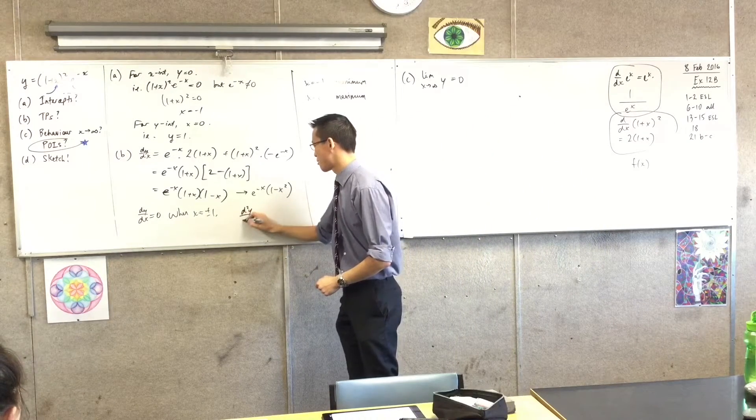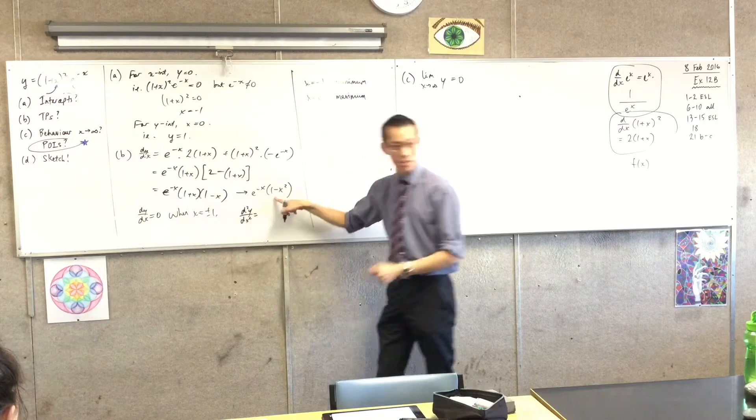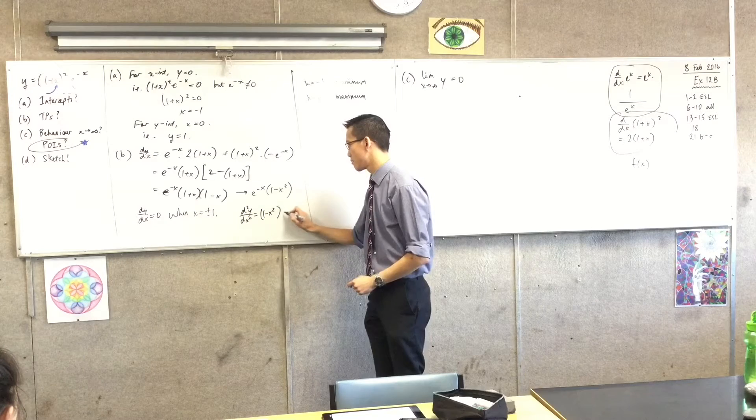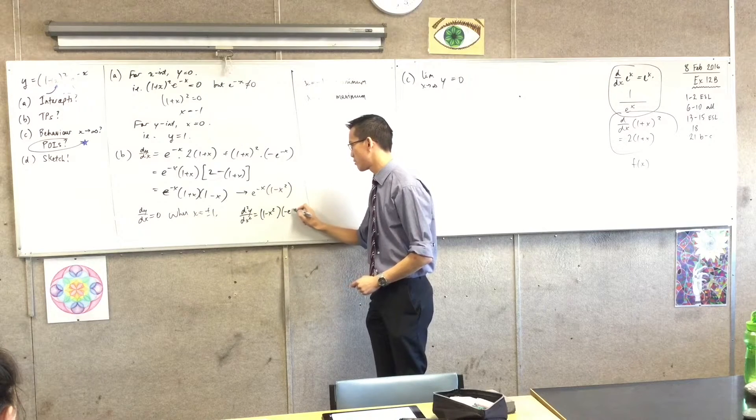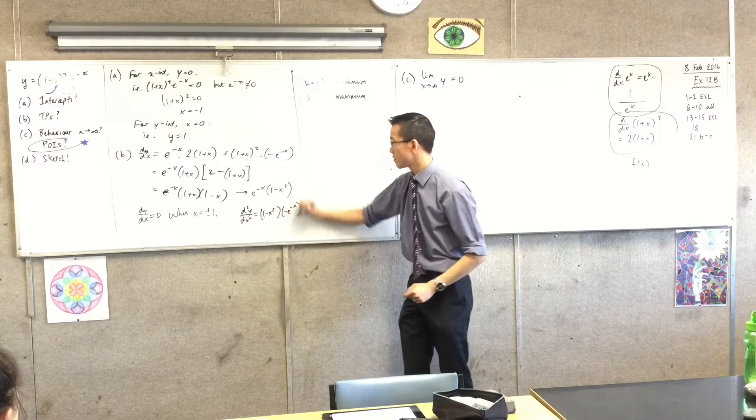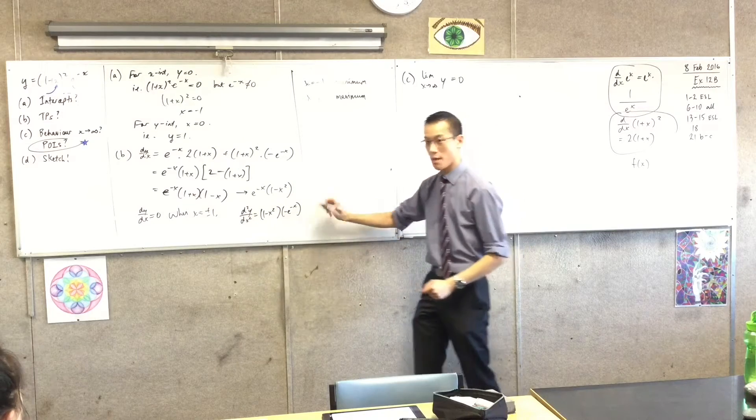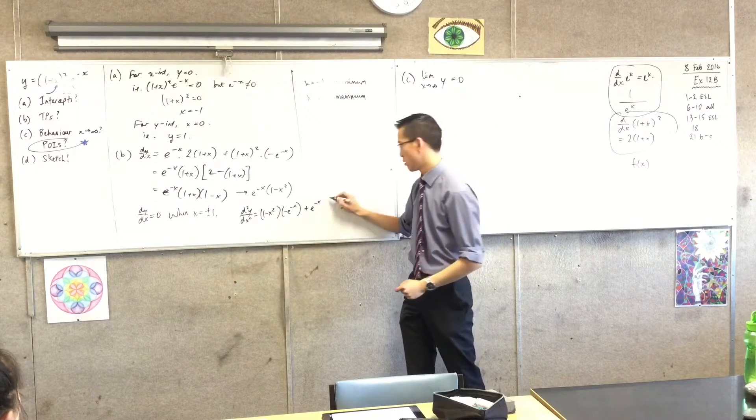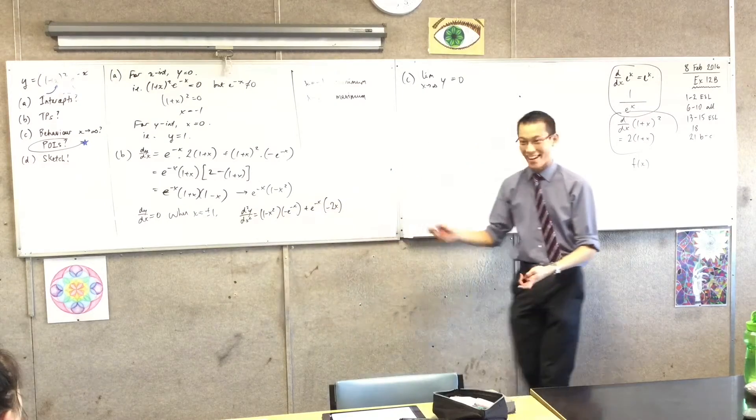Which you can see - what is the second derivative by the way? When you do d squared y on dx squared, let's just quickly do it again. So it's going to be V, U dash. Yeah, did I do it right? Yeah, I reversed the order, that's all I'm getting confused. Plus U, what's V dash? Minus 2x, there you go.